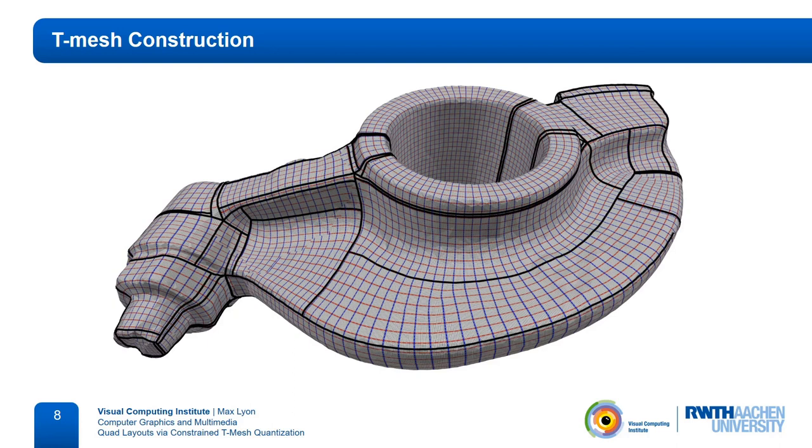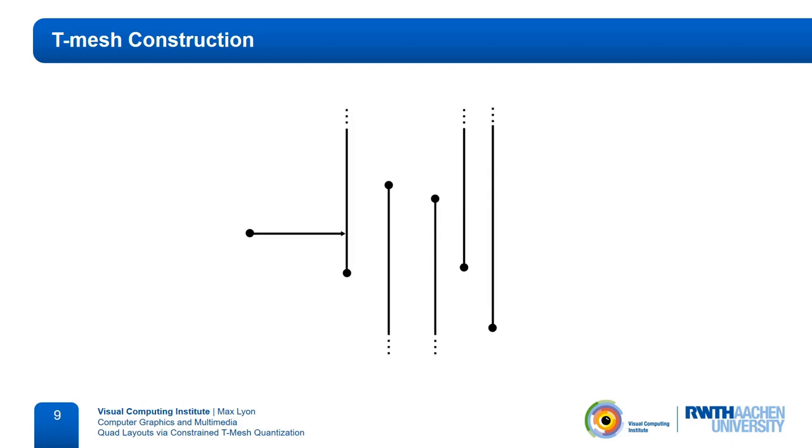In standard motorcycle graphs, the motorcycles are stopped at the first intersection with a trace of another motorcycle. The resulting graph is simple in the sense that it consists of few elements. However, this also makes it more difficult to argue about paths that connect singularities. So, in order to make our lives easier later when we set up constraints, we create a slightly more complex t-mesh by tracing further than just the first intersection.